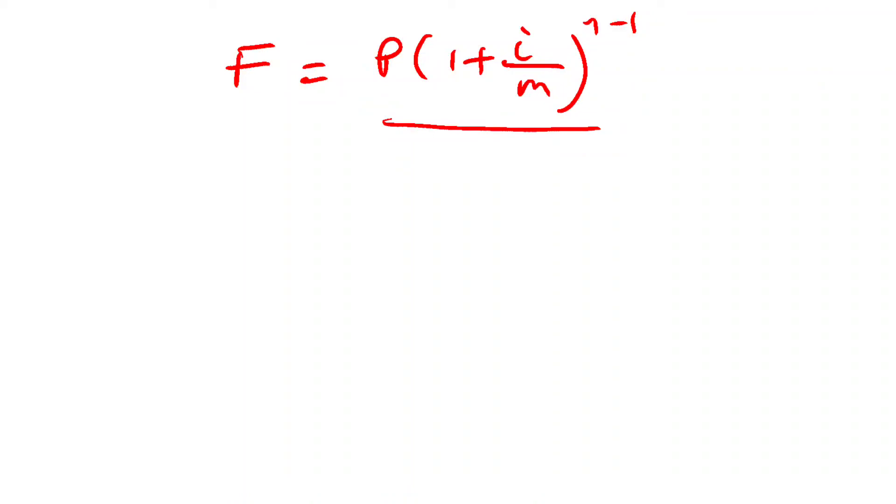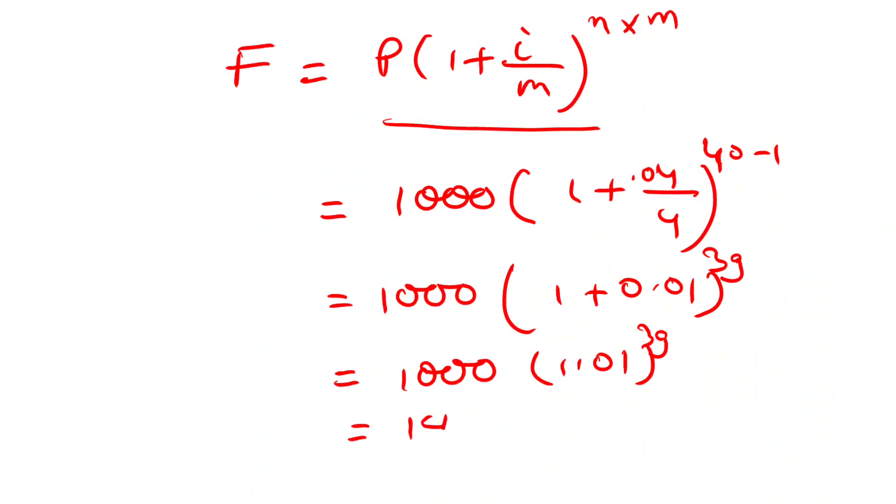When you solve this, you will get 1,486 as the future value. The principal was 1000. To find the interest, F minus P will be 1,486 minus 1,000, which equals 486. That will be your answer.